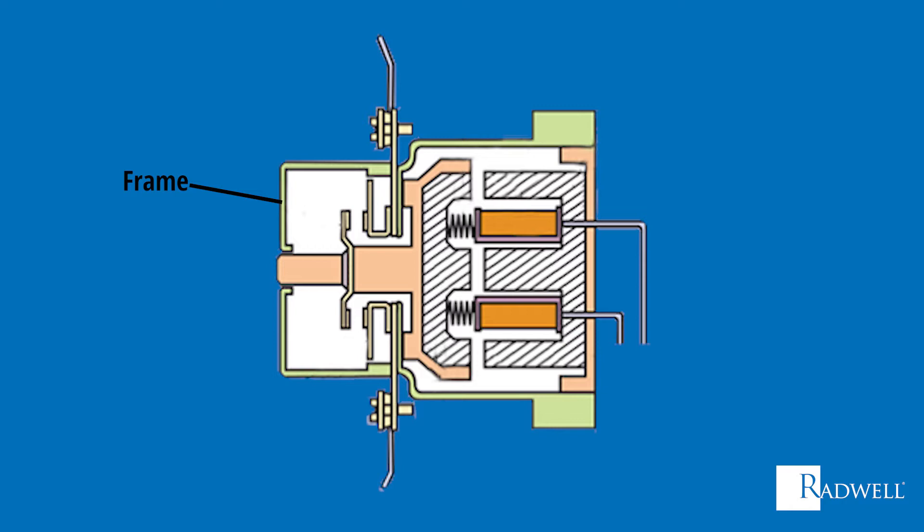Next is the electromagnet system, which is the most crucial component. Without the electromagnet system, a contactor will not run. The electromagnet allows for the contacts to open and close.